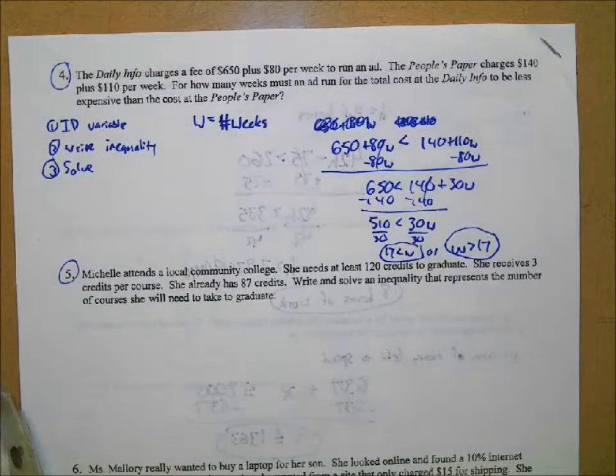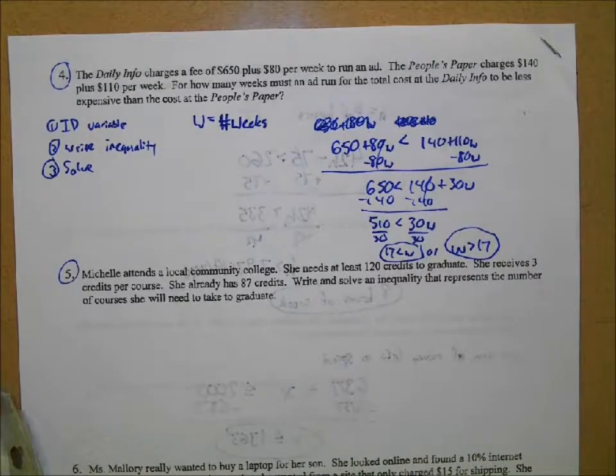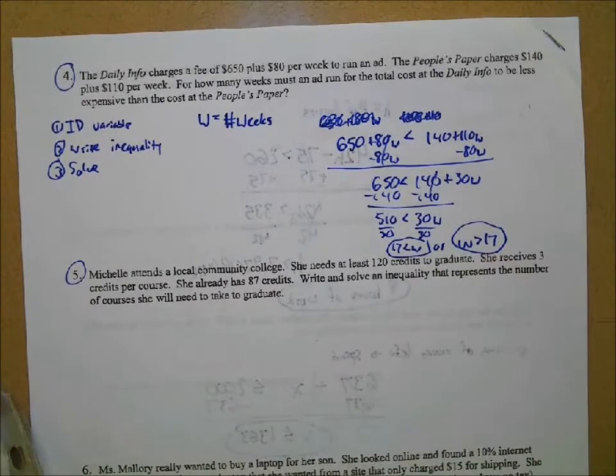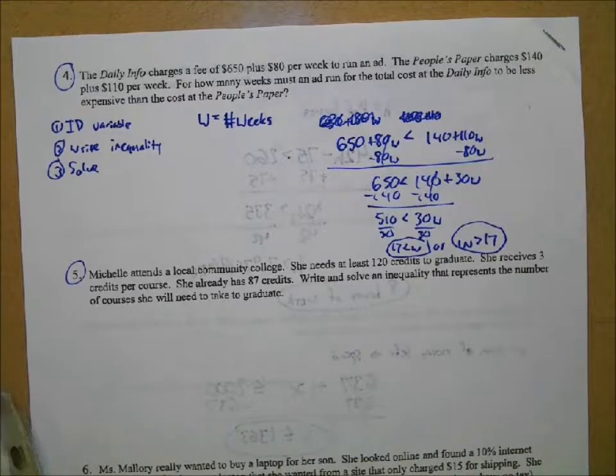Less expensive. OK. Yeah. We would need 18 weeks. 17 wouldn't cut it. 17 wouldn't cut it. 18 would, right? 18 works in this inequality, but 17 does not. OK.